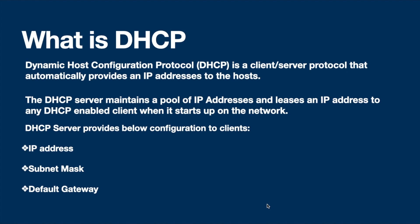The DHCP server provides the following configuration to clients: IP address, subnet mask, and default gateway. So whenever any client machine starts up on the network, the DHCP server will provide that IP address configuration. These are the basic configuration items which will get assigned to any client machine on the network.